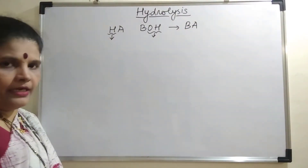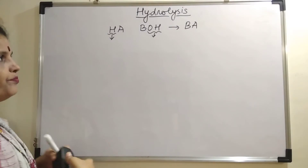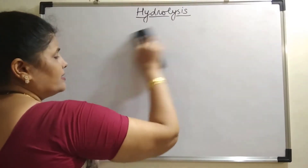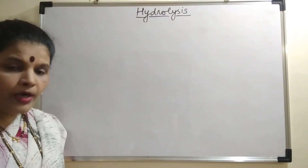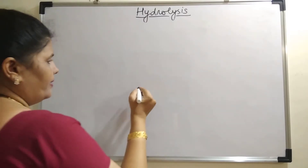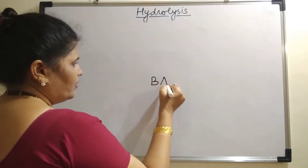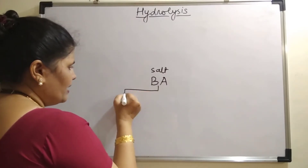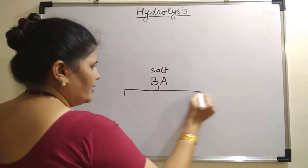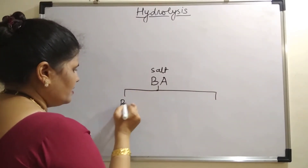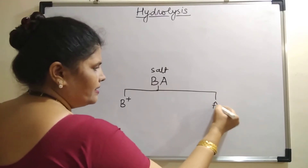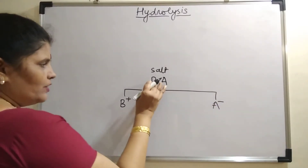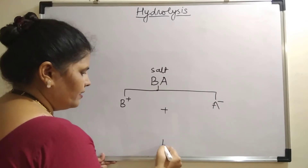Now let us consider this particular salt BA as a common example and dissolve it in water. When I take this salt BA, what will happen? It will give me a cation and an anion. This is the cation and this is the anion. Now when I am dissolving this in water...